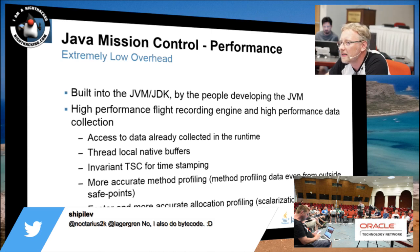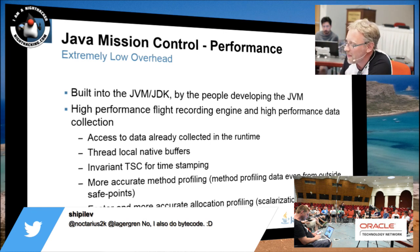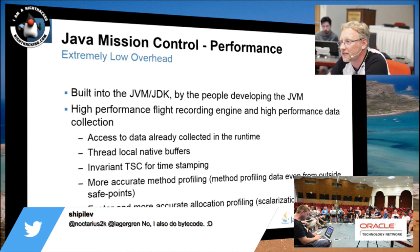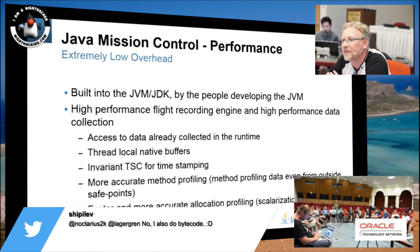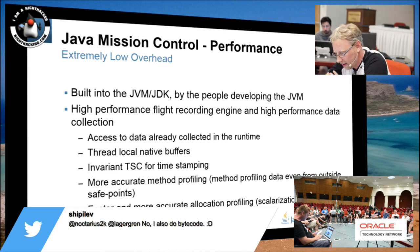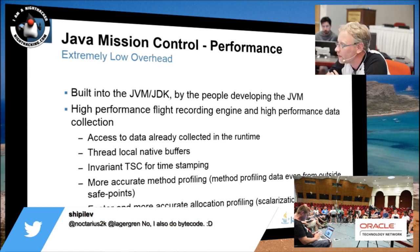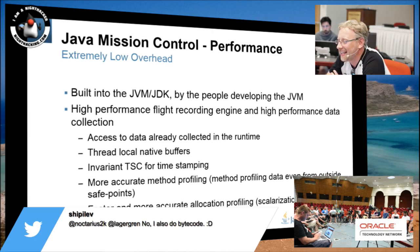JFR especially is focusing on extremely low overhead. We built this into the JVM, and it's being built by the people developing the JVM. We achieved this by a lot of different means — one is that we have access to data that's already being collected by the runtime. We have thread local native buffers, we use timestamp counters in CPU architectures that we support, so we merge in TSC for timestamps very efficiently. We have very accurate method profiling — you can get method profiling sample points even when you're not in a safe point. And we have the best allocation profiling I've seen so far.